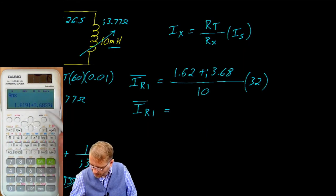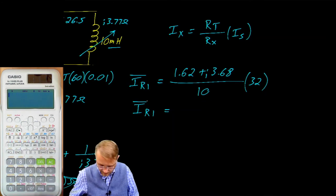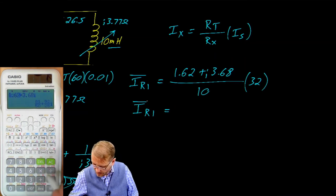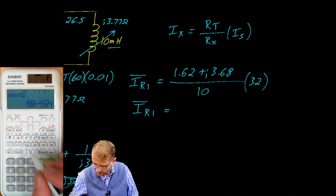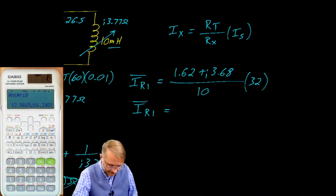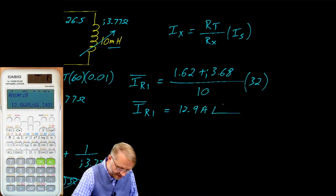So the current on R1 is... I think it's still in the calculator memory. Well, we'll key it in anyway. So parenthesis 1.62 plus 3.68 J divided by 10 multiplied by 32. I'm going to put that into polar. There we go. So that is 12.9 amps at a phase angle of 66.2 degrees.